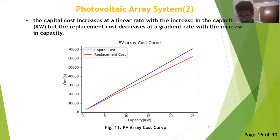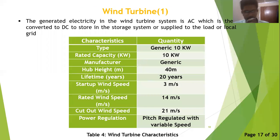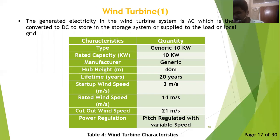The PV array cost curve is shown in this figure. The capital cost increases with the increased PV array capacity in the system, and the replacement cost increases at a graduated rate with the increase in capacity. The wind turbines used in the system are generic 10 kW wind turbines with a rated capacity of 10 kW and a hub height of 40 m. It has a start-up wind speed of 3 m/s, rated wind speed at 14 m/s, and cut-out wind speed at 21 m/s.